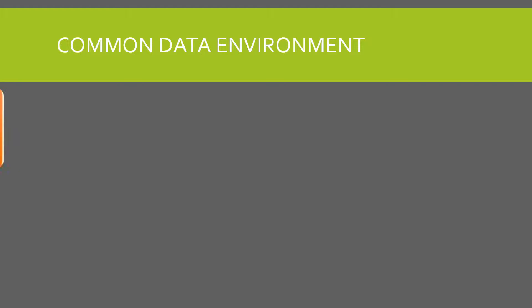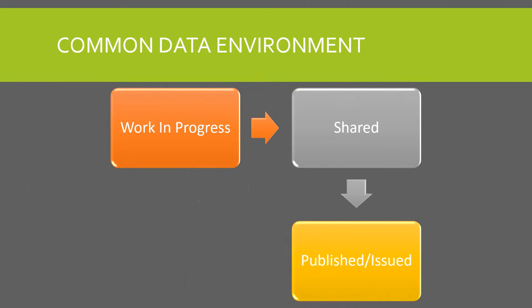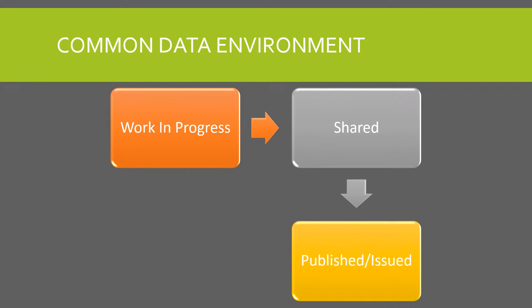The Common Data Environment mainly consists of four key areas: first is WIP — Work in Progress; second is Shared; third is Published; and the fourth and last one is Archived.